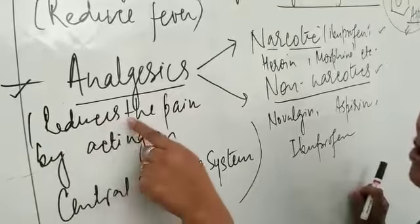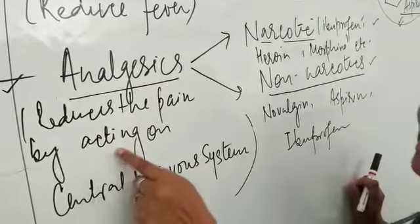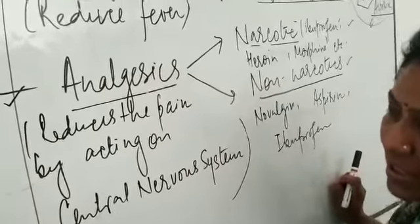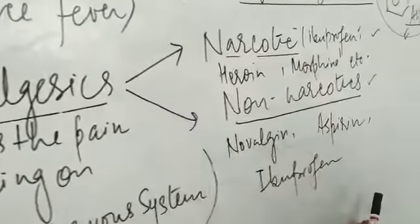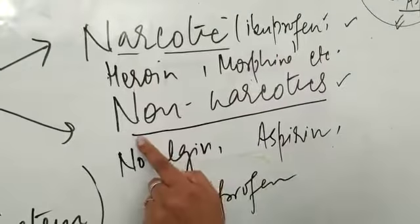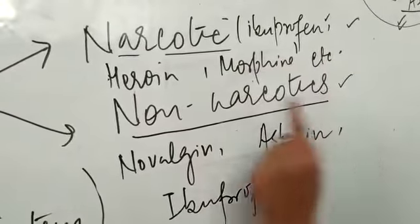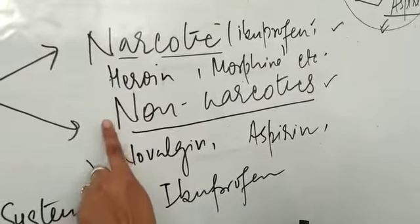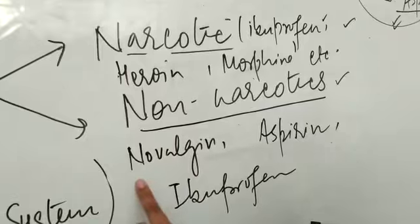Drugs that reduce pain by acting on the central nervous system are classified as analgesics. These can be further classified into Narcotic and Non-Narcotic Analgesics. Non-narcotics are common painkillers we use in day-to-day life, such as Novalgin,